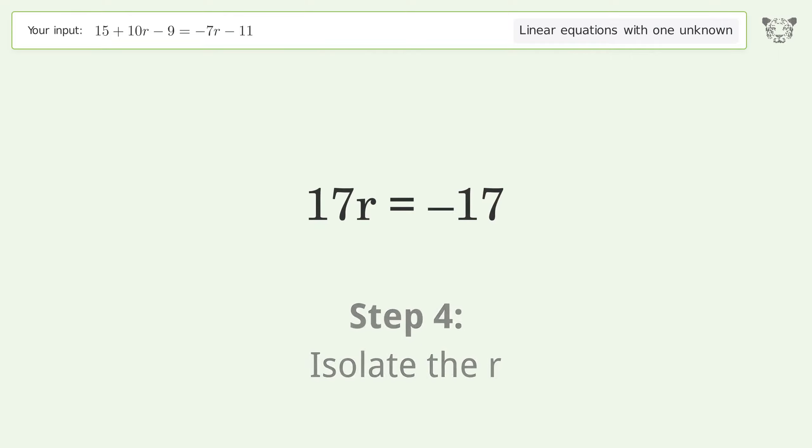Isolate the r. Divide both sides by 17. Simplify the fraction. And so the final result is r equals negative one.